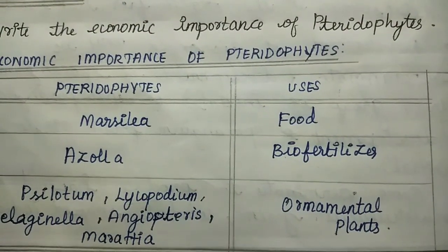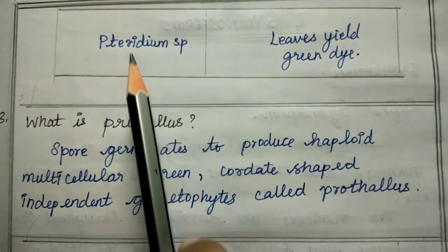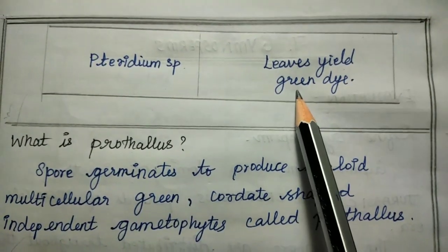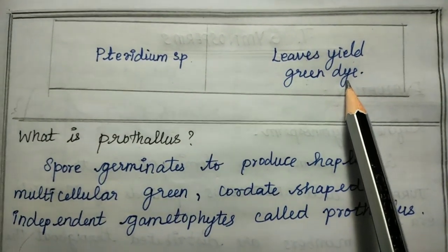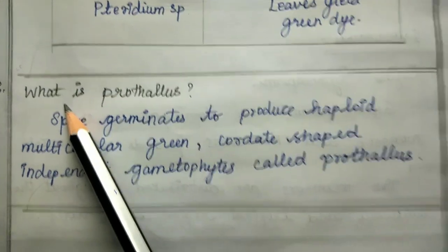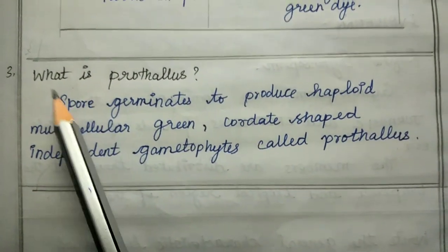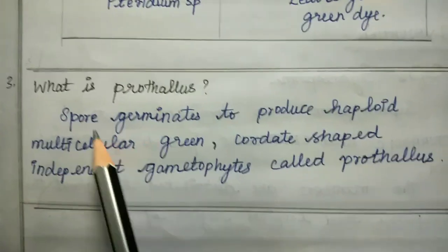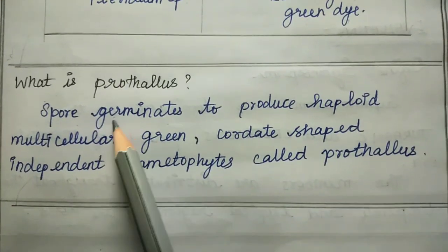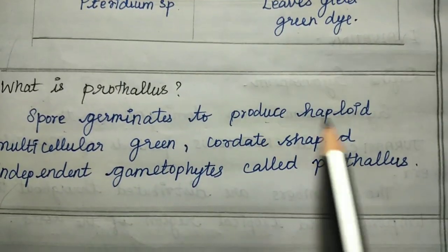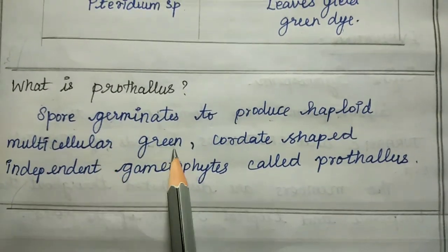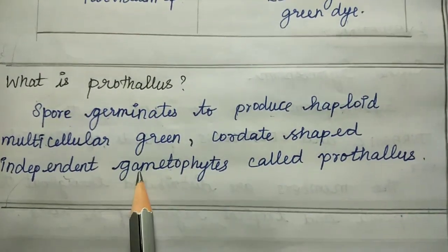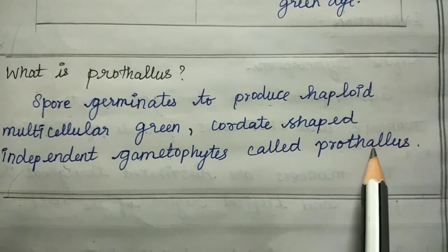What is prothallus in pteridophytes? Spore germinates to produce haploid, multicellular, green, cordate-shaped independent gametophytes called prothallus.